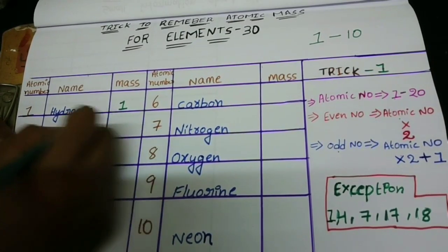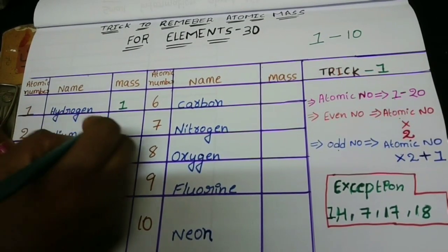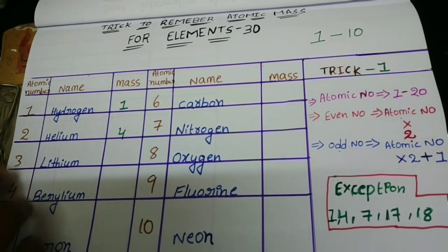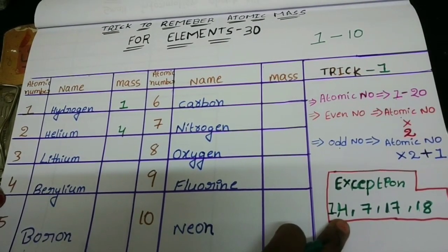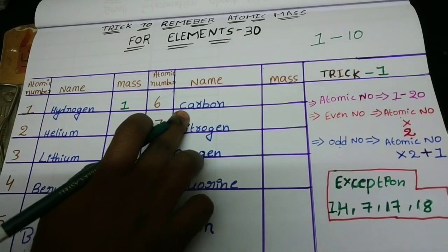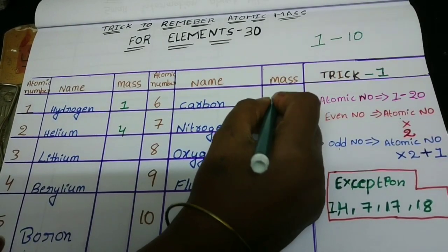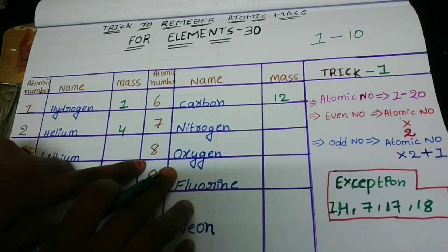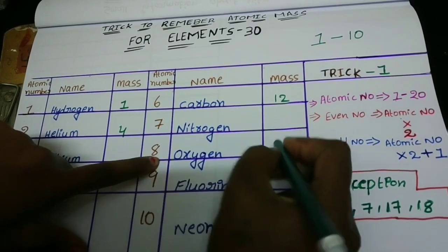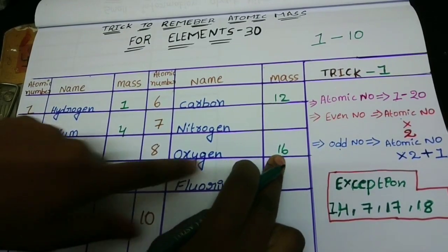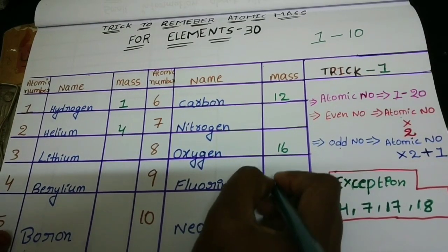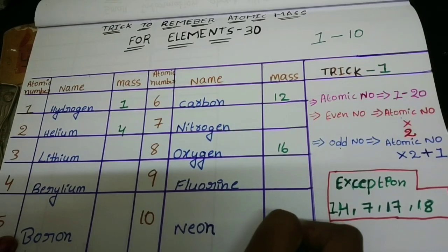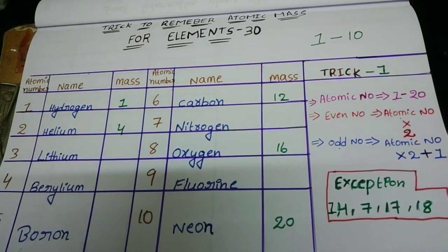For helium, atomic number is 2: 2 × 2 = 4. So 4 is the atomic mass of helium. For beryllium (atomic number 4), it is an exception — we will handle it separately. For carbon, atomic number 6: 6 × 2 = 12. 12 is the atomic mass of carbon. For oxygen, 8 × 2 = 16. 16 is the atomic mass of oxygen. For neon, 10 × 2 = 20. 20 is the atomic mass of neon.